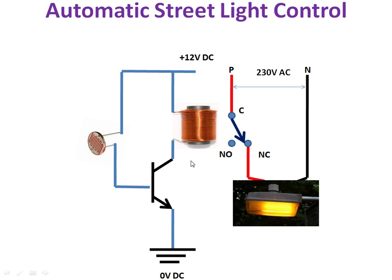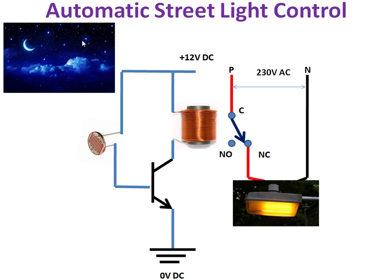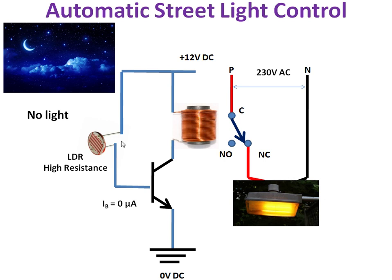One application of a transistor is automatic street light control. During nighttime, there is no sunlight, so the resistance of the LDR is very, very high — essentially infinity, meaning the LDR is an open circuit. So IB equals zero microamperes, and there is no current flowing to the base terminal, causing the transistor to act as an off switch.